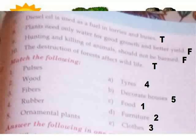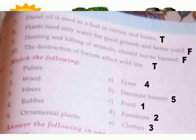Diesel oil is used as a fuel in lorries and buses. Answer: True. Plants need only water for good growth and better yield. Answer: False. Hunting and killing of animals shall not be banned. Answer: False. The destruction of forests affects wildlife. Answer: True.